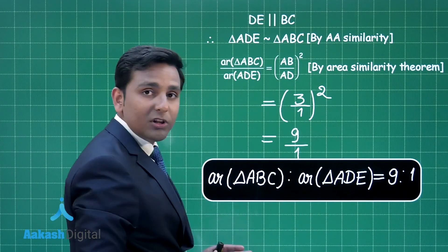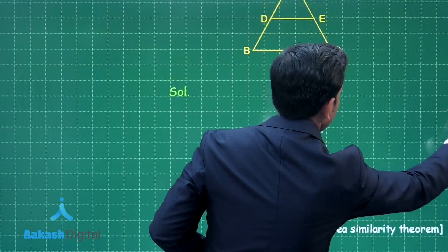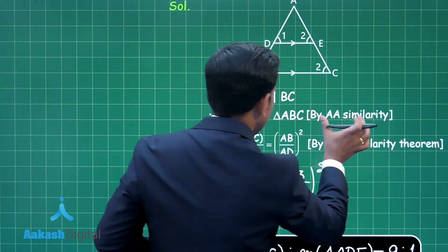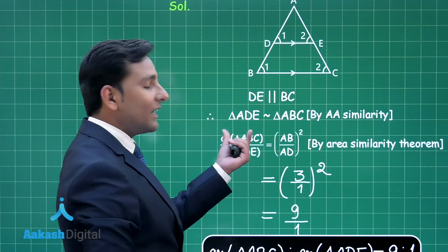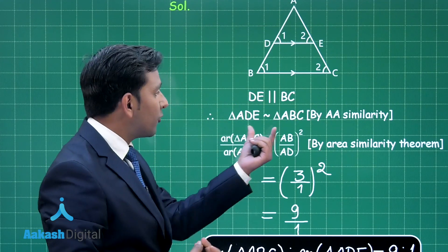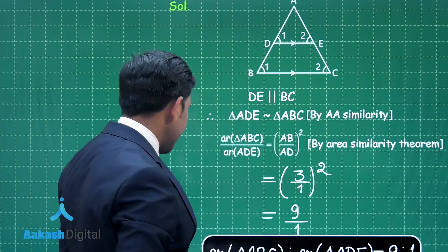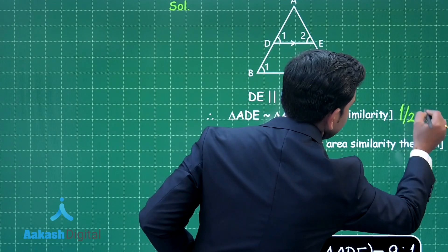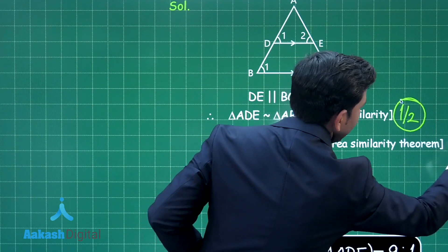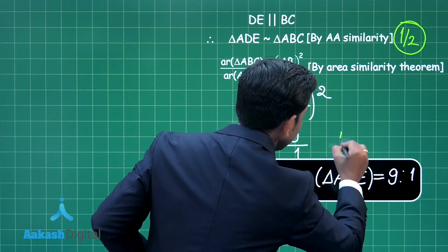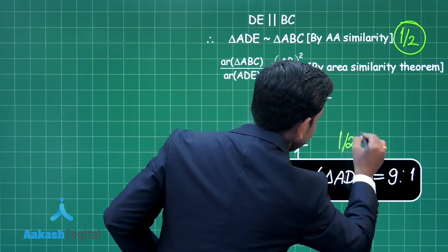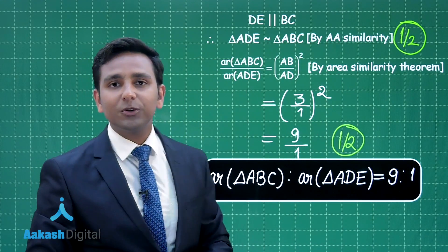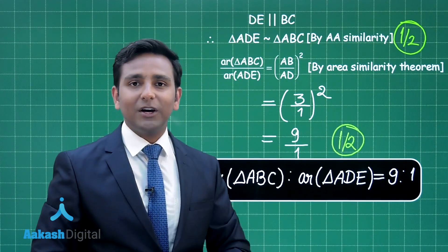Now come to the marking scheme. This step — when you prove triangle ADE is similar to triangle ABC — will give you half mark for this question, and the rest half mark on the final ratio step. I hope you understood this question. Now let us proceed to the next one.